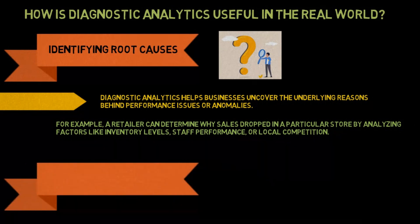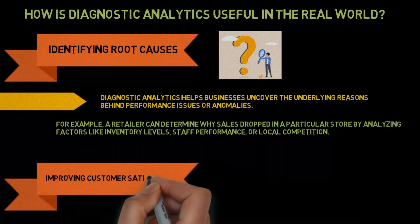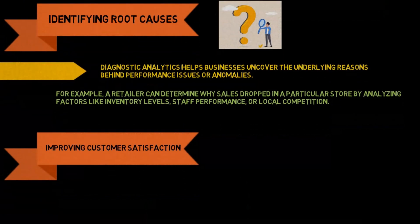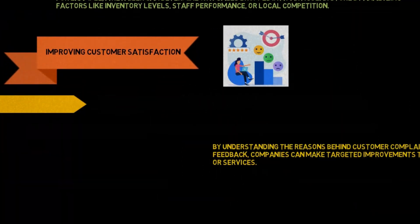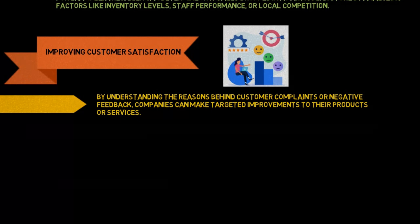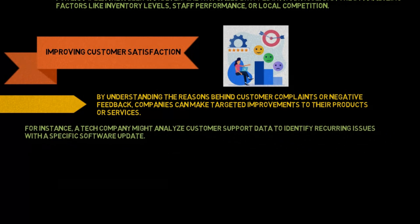Second, improving customer satisfaction. By understanding the reasons behind customer complaints or negative feedback, companies can make targeted improvements to their products or services. For instance, a tech company might analyze customer support data to identify recurring issues with a specific software update.